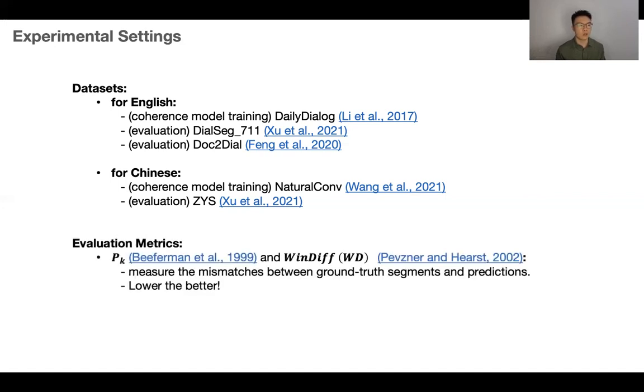We consider to include the standard PK and WinDiff error scores as our evaluation metrics. Since these two metrics have been widely utilized for comparing topic segmenters, they basically measure the probability of mismatches between the ground truth segments and model predictions within a sliding window. They are both penalty metrics. Lower score indicates better performance. And we also use the F1 score as another metric and higher value means better performance.